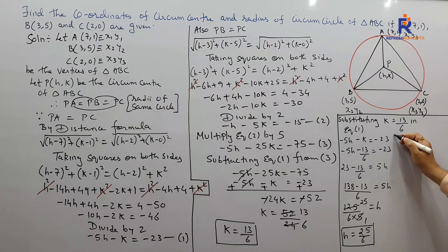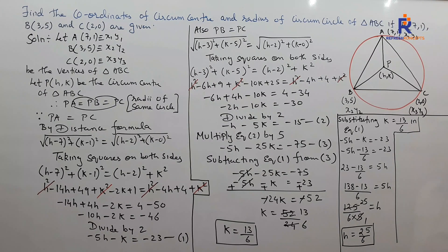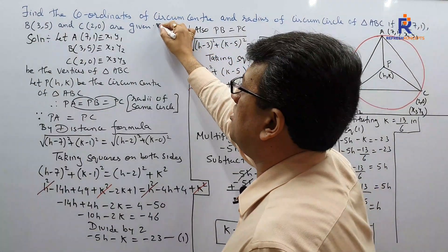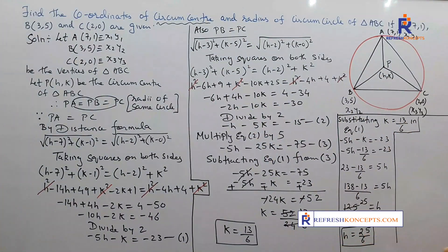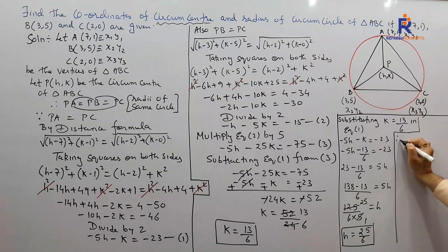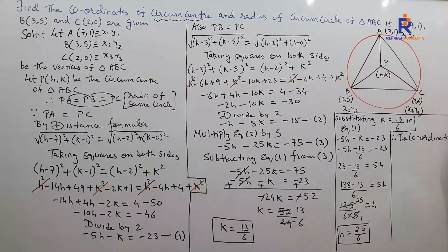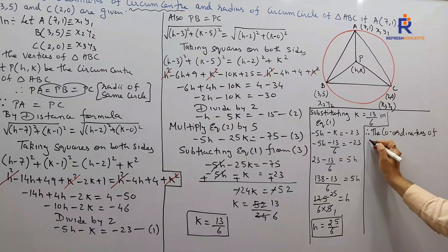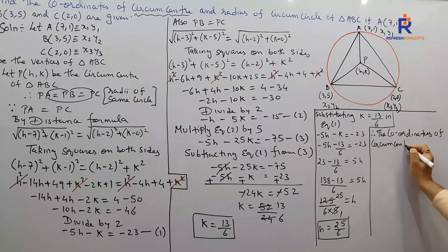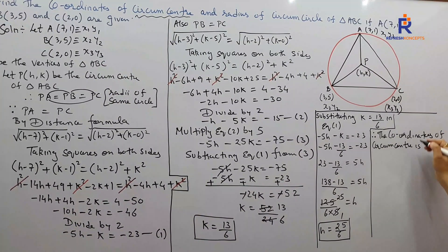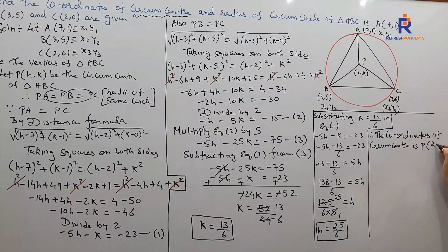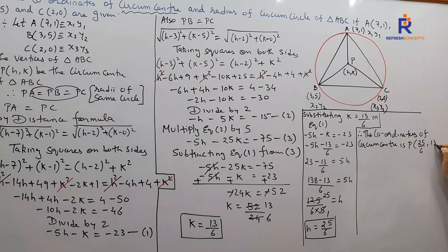We have found the circumcenter coordinates. Therefore, the coordinates of the circumcenter are P(h, k) = (25/6, 13/6).